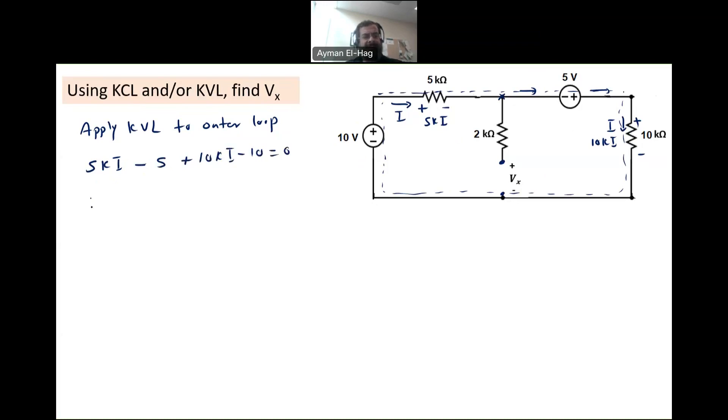So we have 15Ki is equal to 15. So your I will equal to the 15 volt divided by the 15K resistance, which is 1 milliamp.